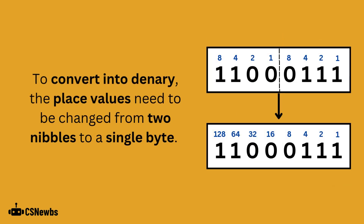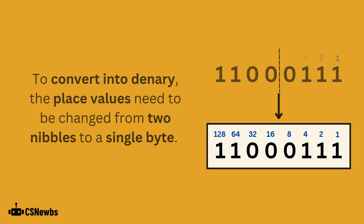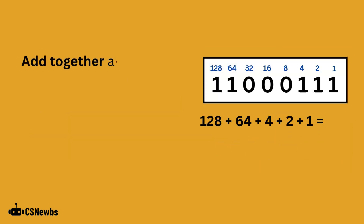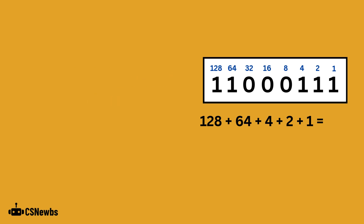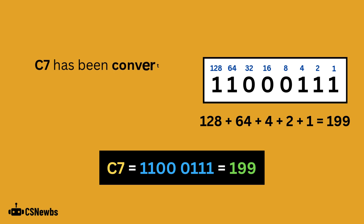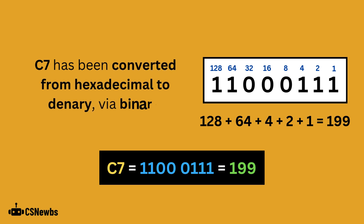To convert into decimal, the place values need to be changed from two separate nibbles into a single byte, with the place values from 1 to 128, right to left. Now add together all the place values that have a 1 beneath them: 128 plus 64 plus 4 plus 2 plus 1. This gives 199, and C7 has now been converted into 199 via a binary conversion first.